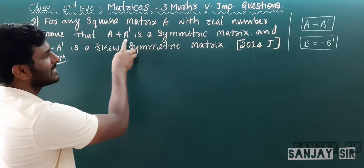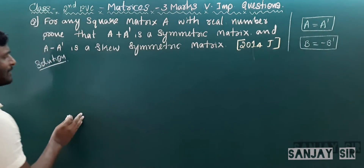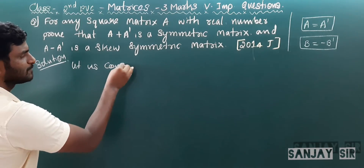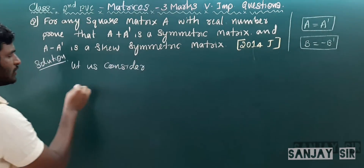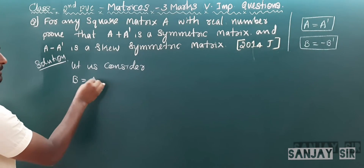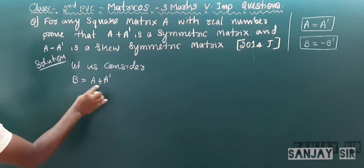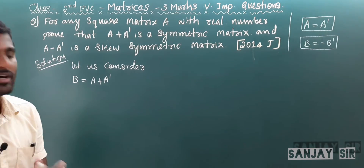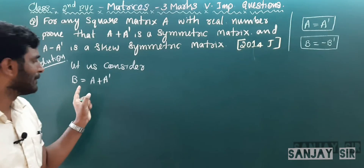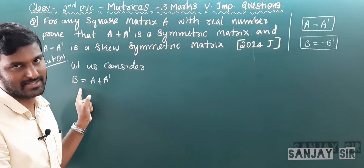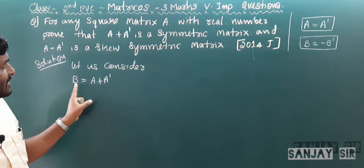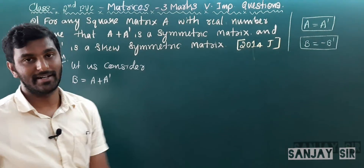Let us prove first that A + A' is a symmetric matrix. Let B = A + A'. We have to prove B is symmetric, meaning B = B'. Apply the transpose on both sides.